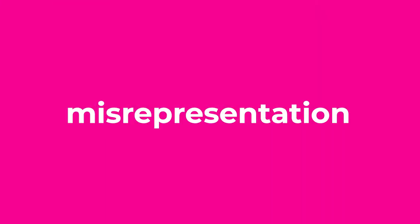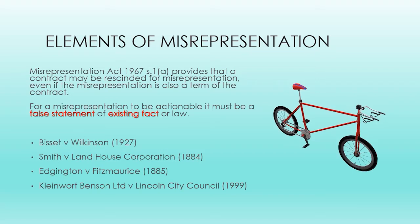When negotiating a contract, the prospective parties may say many things which are designed to encourage the other party to enter into the contract. Sometimes these statements become terms of the eventual contract. If they do not, a remedy may nevertheless be available to a party who has been induced to enter into a contract in reliance on a falsehood. After the Misrepresentation Act of 1967, more extensive remedies in damages available for misrepresentation were introduced into English law.